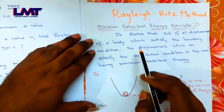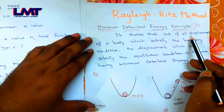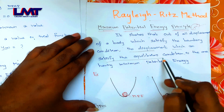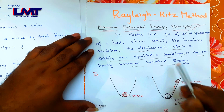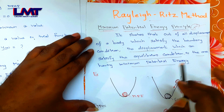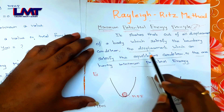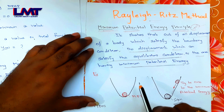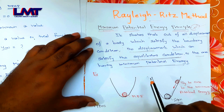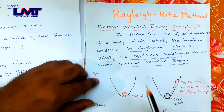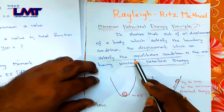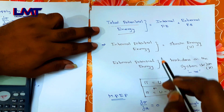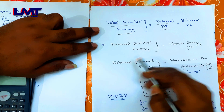Now let's state the principle formally: out of all the displacements of a body which satisfy the boundary conditions, the displacement that satisfies the equilibrium condition is the one having the minimum potential energy. Total potential energy consists of internal potential energy and external potential energy.